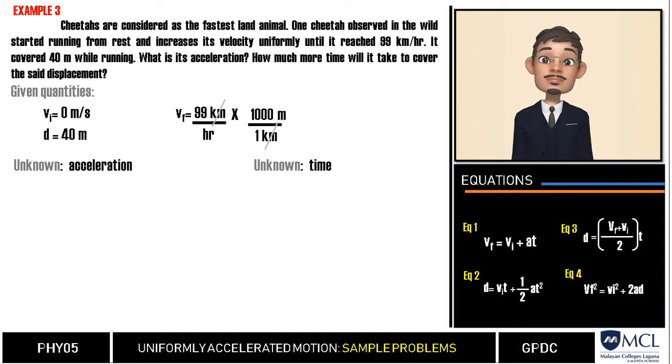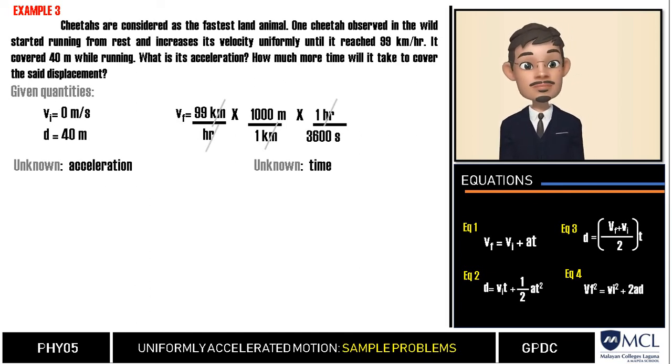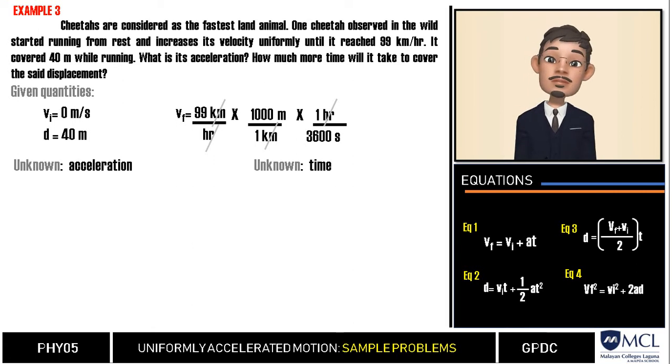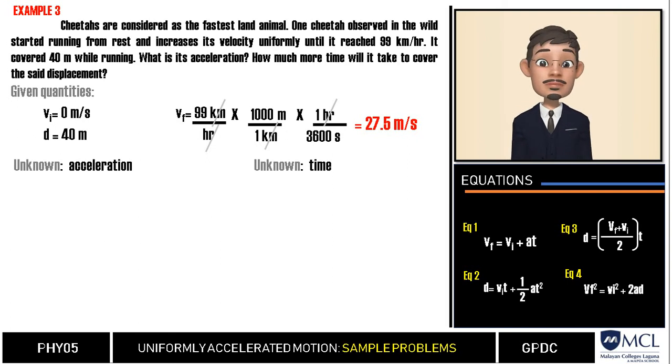So we multiply this by 1 hour over 3,600 seconds. We will cancel the unit and that leaves us meters per second. When we perform these indicated operations, our value will be 27.5 meters per second, which is our final velocity in meters per second.